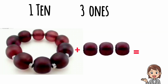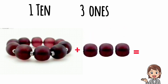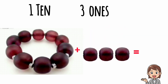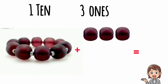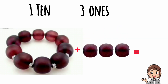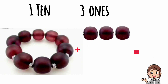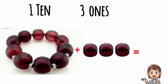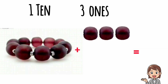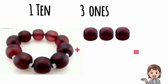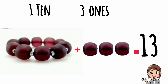Students, we have one bracelet and three beads. One bracelet means one ten and three beads means three ones. So one ten and three ones make thirteen. Thirteen.